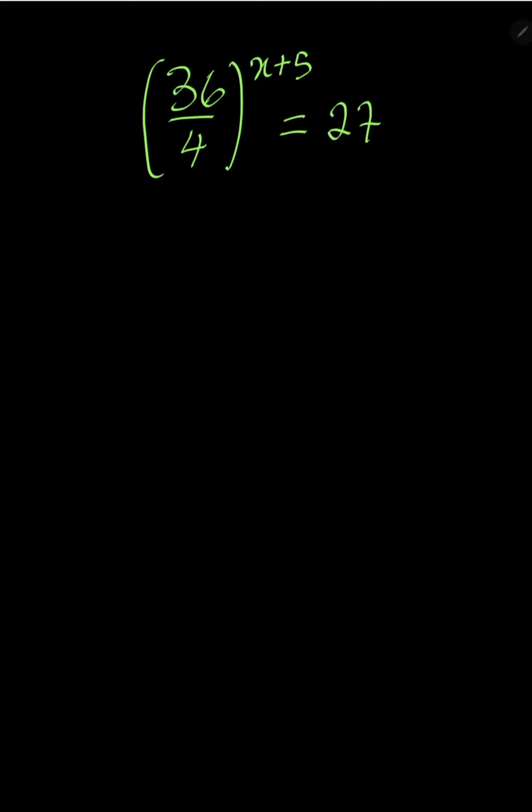So we have 36 over 4 all to the power of x plus 5 equal to 27. Remember that 36 over 4 is the same thing as 36 divided by 4, which will give us 9 to the power of x plus 5, everything equal to 27.